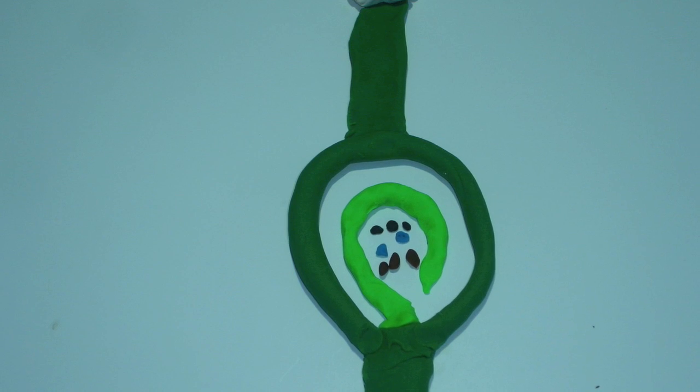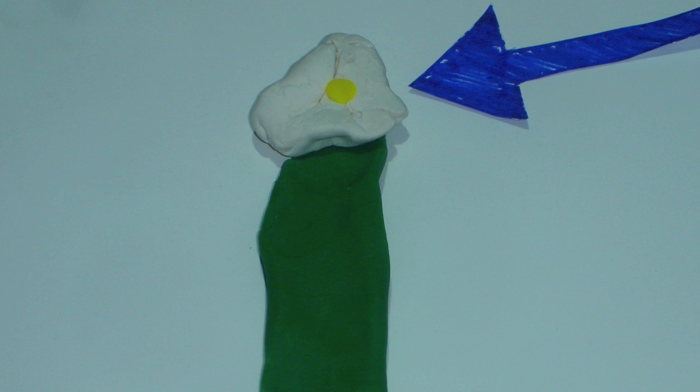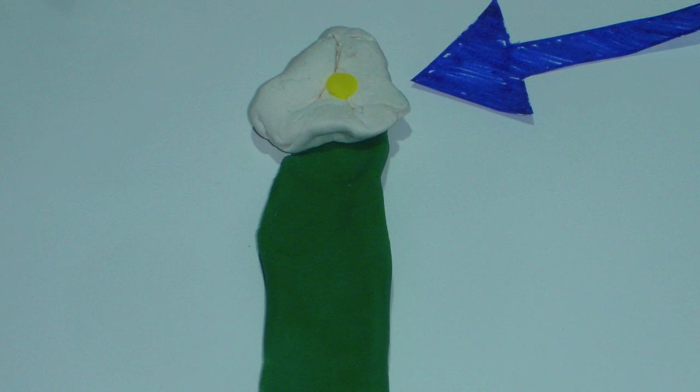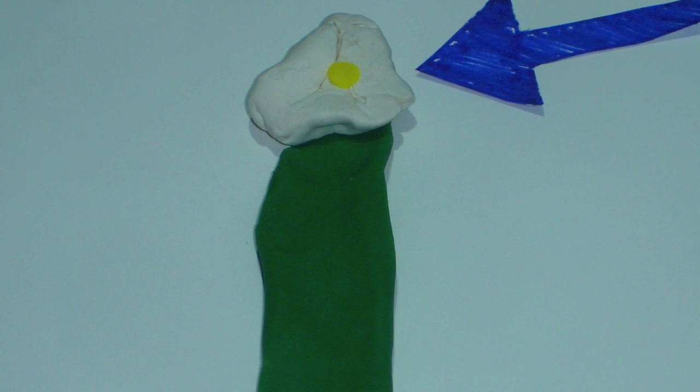This is what it looks like inside the pistil. We will be using this to show how it works. This is the stigma. It's the sticky top part of the pistil, covered with sugar to nourish the pollen.